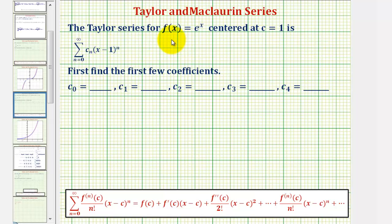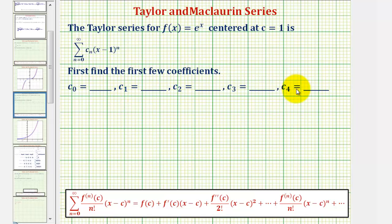We want to find the Taylor series for f of x equals e raised to the power of x, centered at c equals one. And then we want to give the first few coefficients, c sub zero through c sub four.